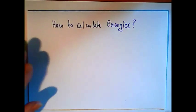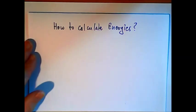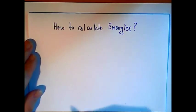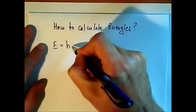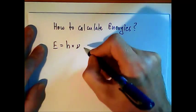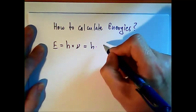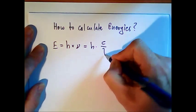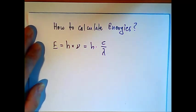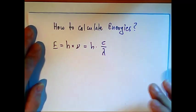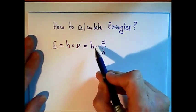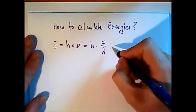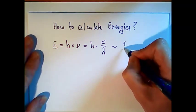How do we calculate the energies? From physics, the energy of any electromagnetic wave is h multiplied by frequency nu, or h multiplied by speed of light divided by lambda wavelength. This is the energy formula for every electromagnetic wave, including visible light. Since h and c are constants, we can say the energy is proportional to 1 over lambda.